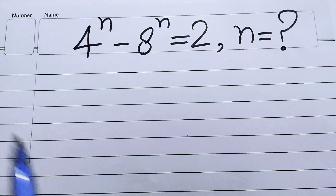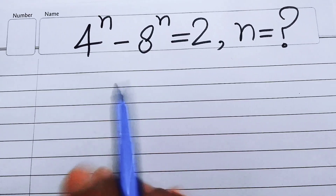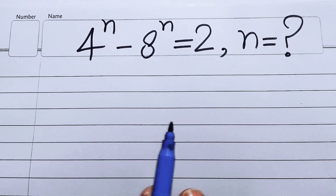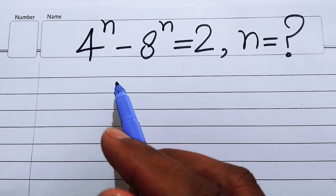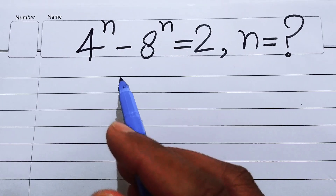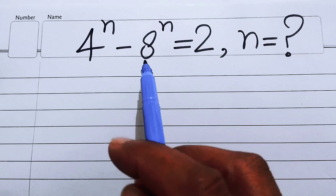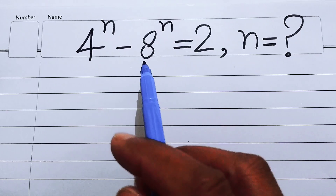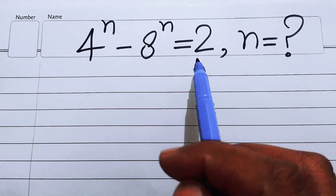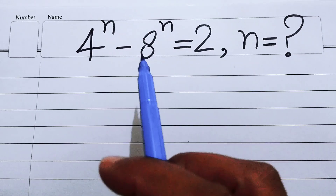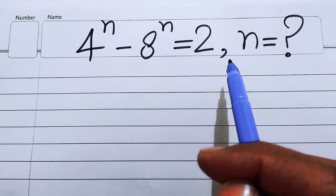Hello everyone, welcome back to the Map of Mathematics. In this video we are going to solve this nice math algebraic problem: 4 to the power of n minus 8 to the power of n equals 2, and we will solve this problem for the values of n.